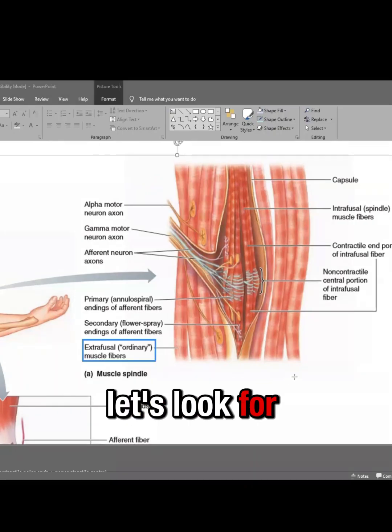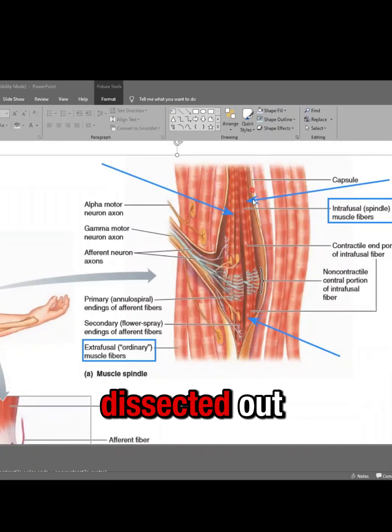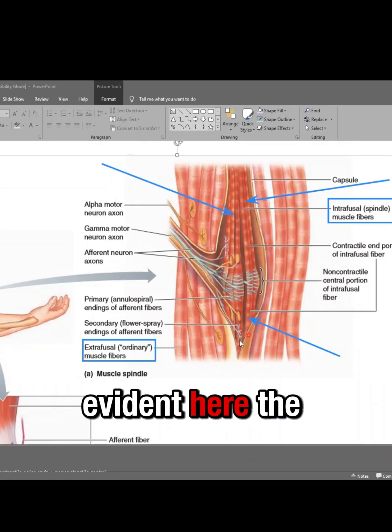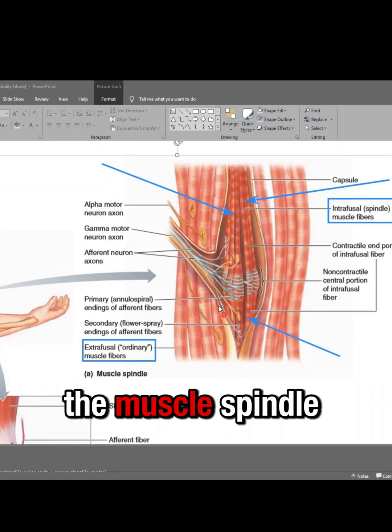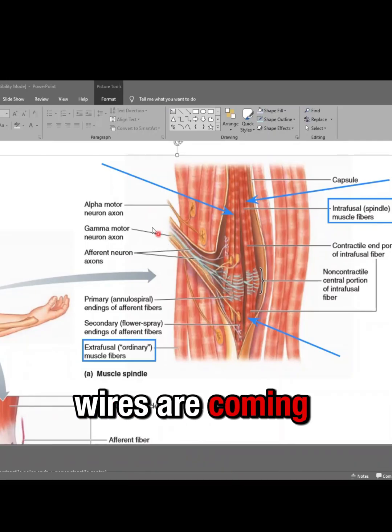Let's look for intrafusal fibers, these guys. You can see that he has dissected out. These are the cut edges. You can see evident here, the cut edges of the muscle spindle. And this is where all the wires are coming. The nerves are coming.